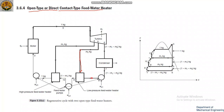The condensed water will directly mix with the low pressure steam. Due to this direct mixing, the pressure will drop. So a pump is needed to increase the pressure.